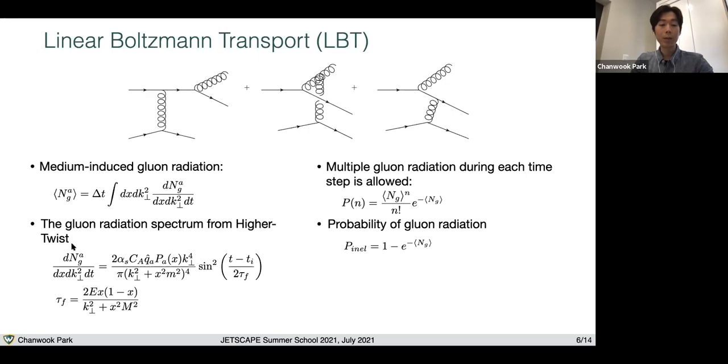This gluon spectrum can be obtained from higher twist formalism where this P of x is the medium-modified splitting function. Here, this tau_f is the formation time of the radiation. You can see that this formation time is proportional to the energy of the parton and the momentum fraction taken by the radiated gluon.